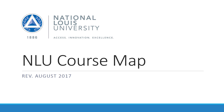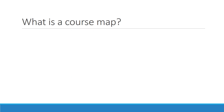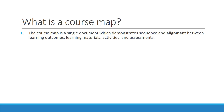So let's go ahead and get started. First of all, what is the course map? The course map is a single document which demonstrates sequence and alignment between learning outcomes, learning materials, activities, and assessments.